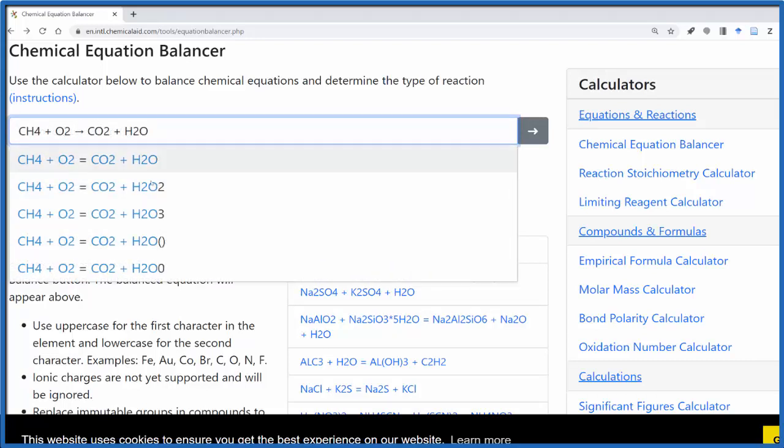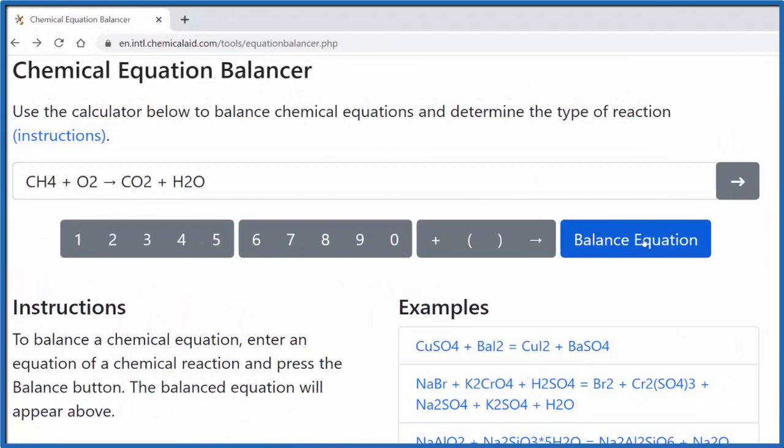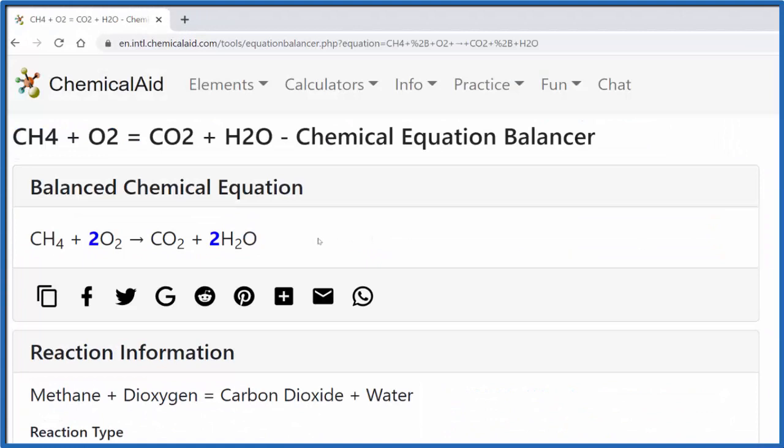I have the equation here. It gives me some examples of different similar equations—maybe I have the wrong equation—but I know this is the equation I'm trying to balance. I hit 'balance the equation' and it gives me the balanced equation with the coefficients. That's really nice.